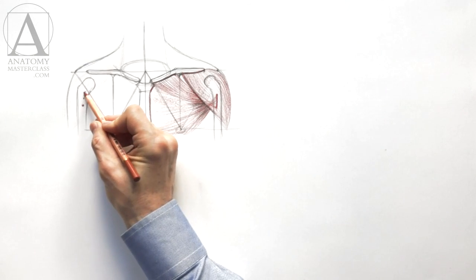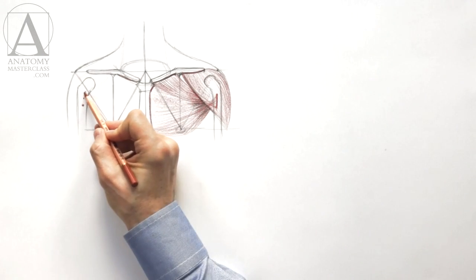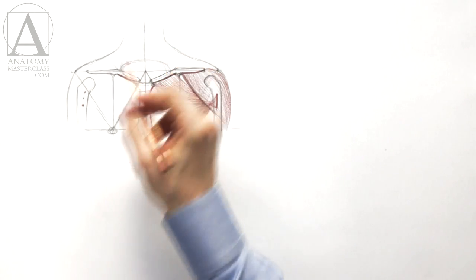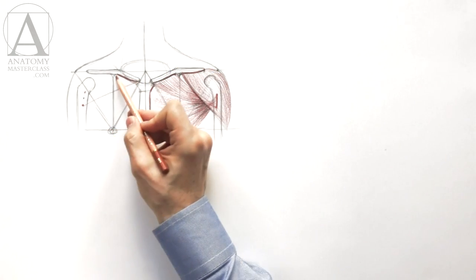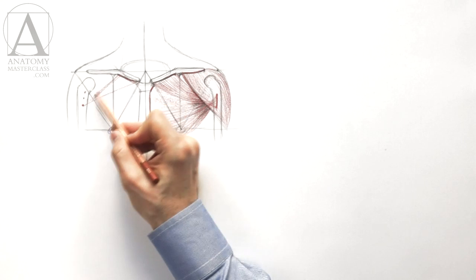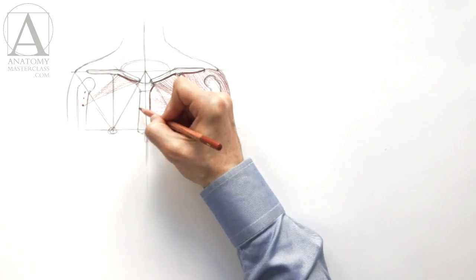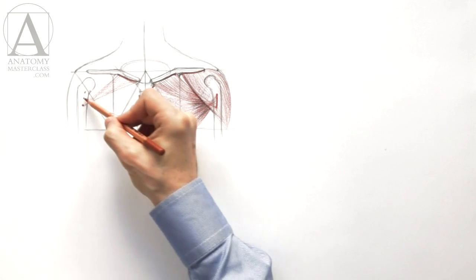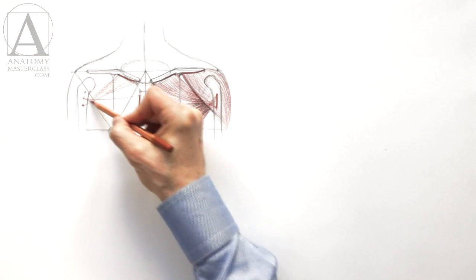I will indicate these three insertion points on another humerus. Once again, the clavicle portion or the collarbone portion goes from the inner half of the collarbone into the lowest point of insertion. The sternal or breastbone portion goes horizontally from the breastbone into the middle point of insertion.